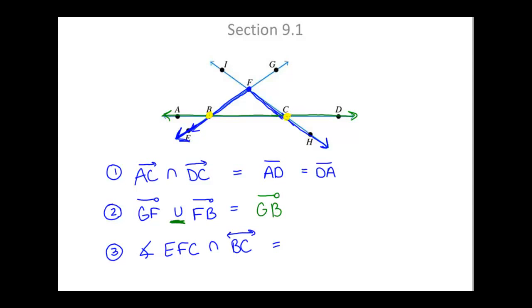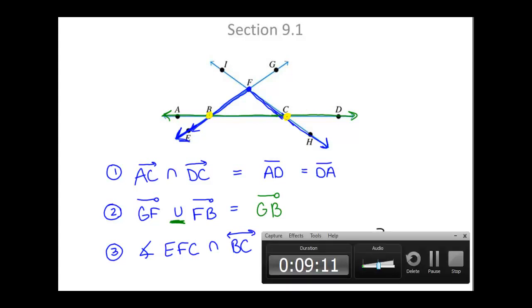So the way that we'll write that as our solution would be listing those two points. Point B and point C would be the intersection of angle EFC and line BC.